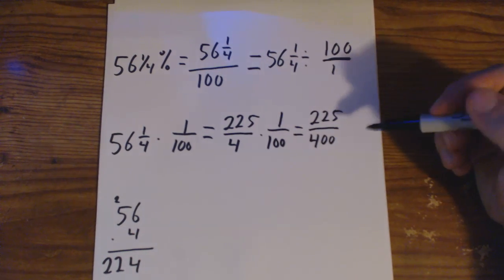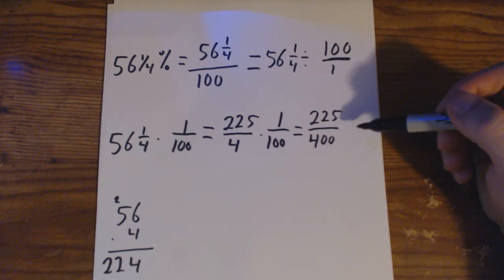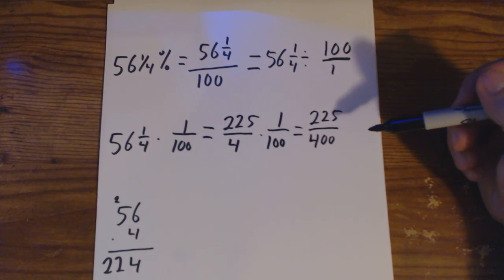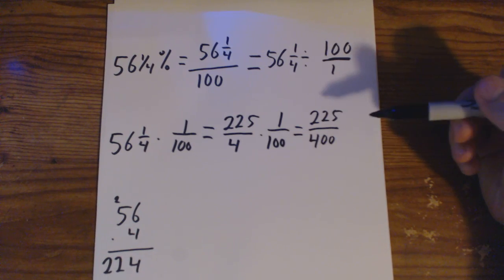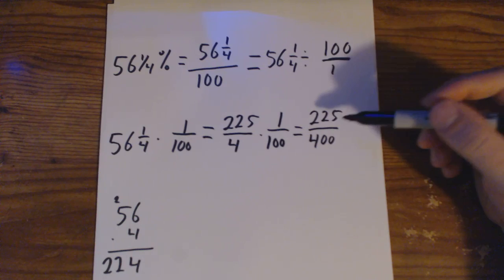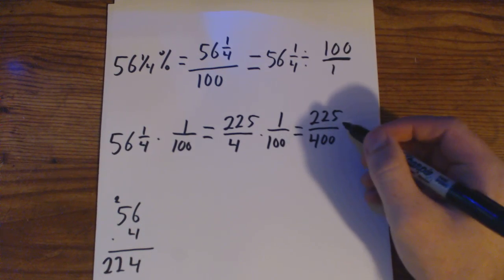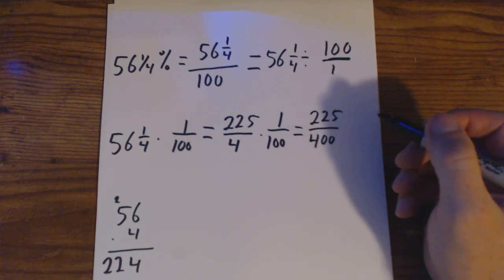Now we need to simplify. Looking at these numbers, try and think of something that would go into them easy. I often think of money. Looking at these, I can think quarters. Does a quarter go into $2.25? 225? Yeah,